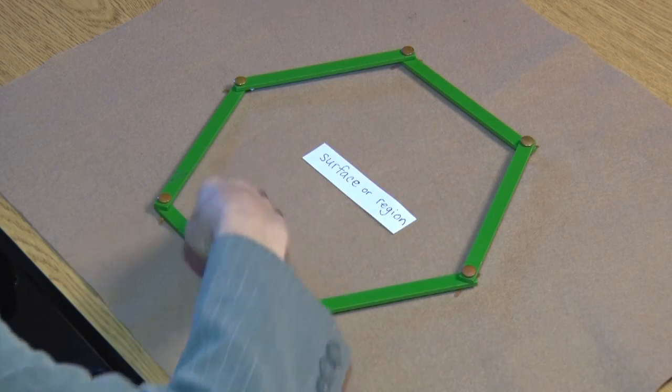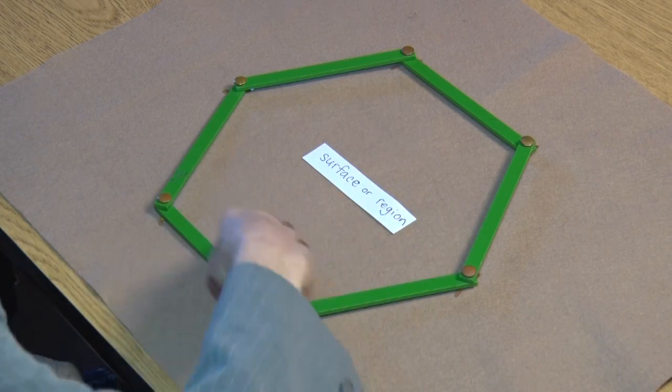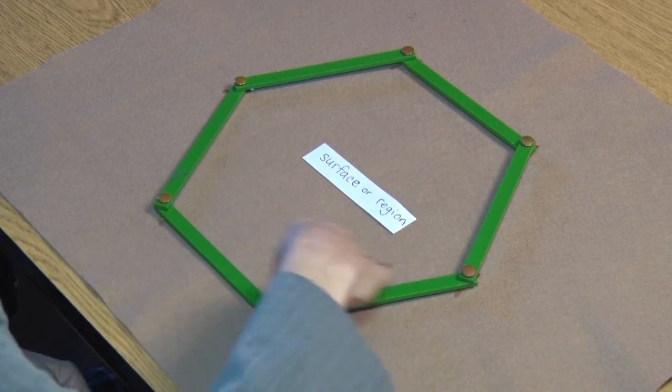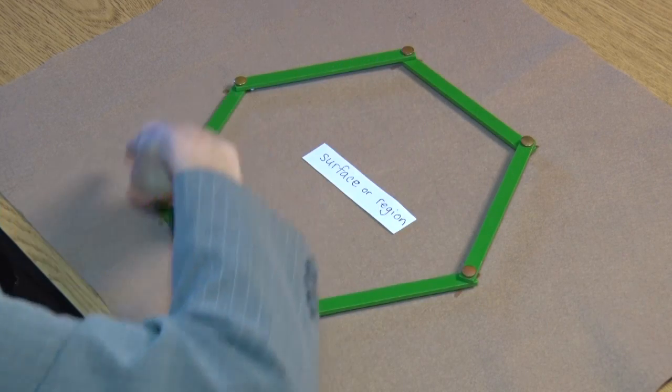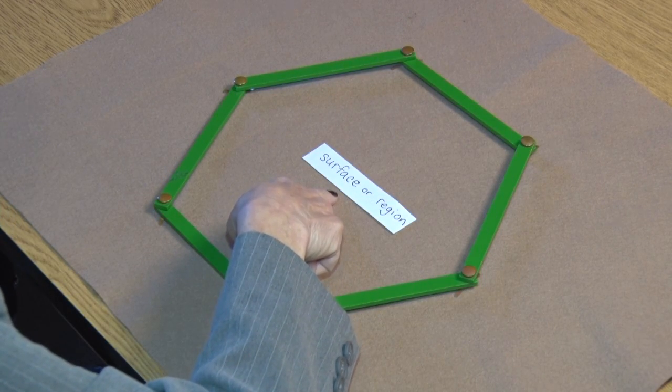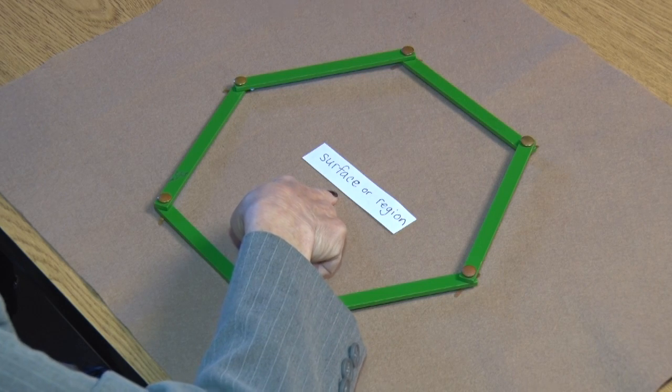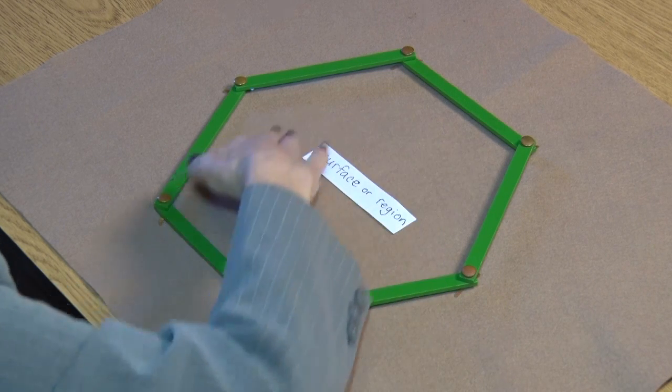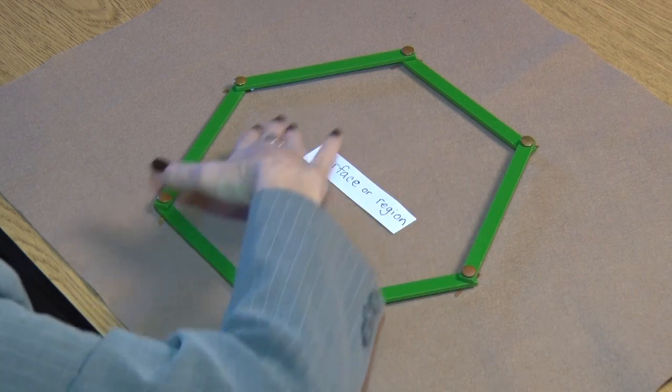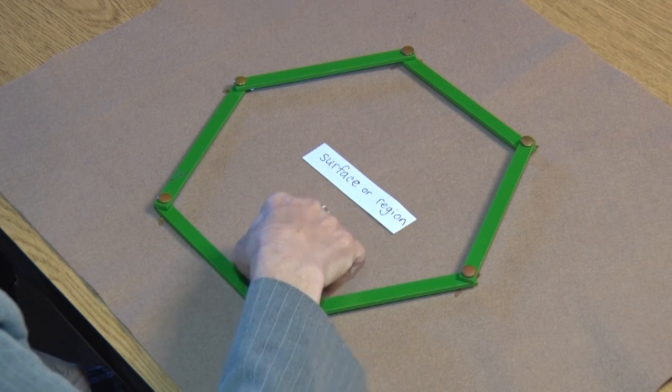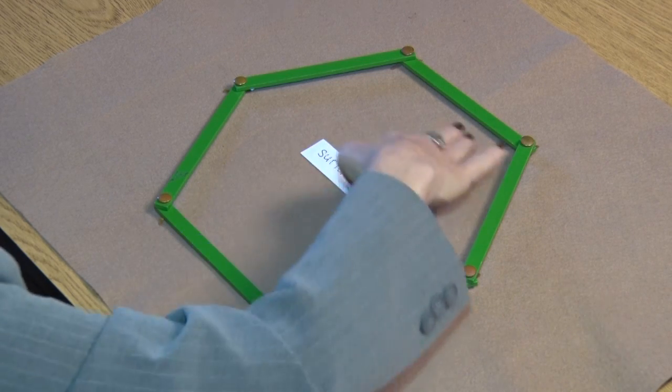This part of the polygon, the area inside its sides, is called the surface or region or area. So this is the surface of the polygon. It's a measurement of space.